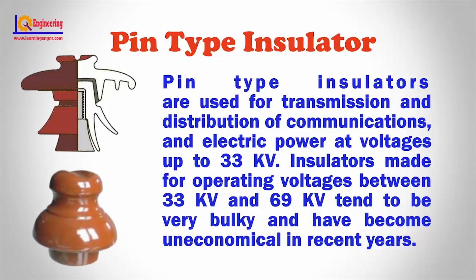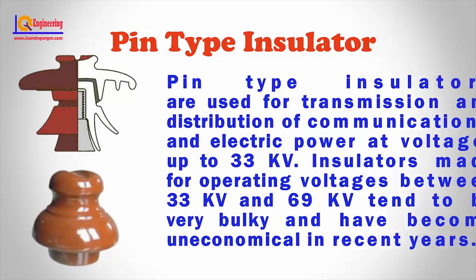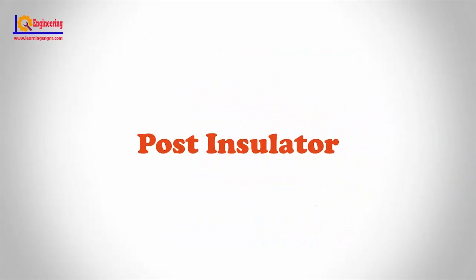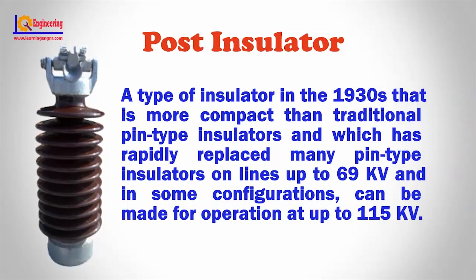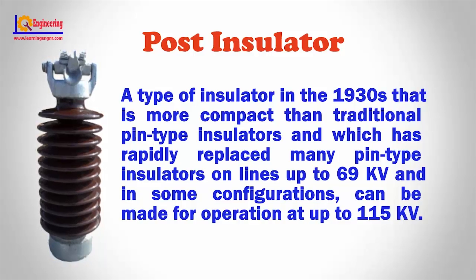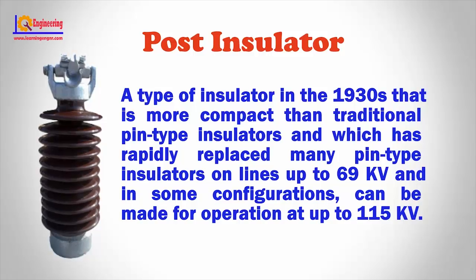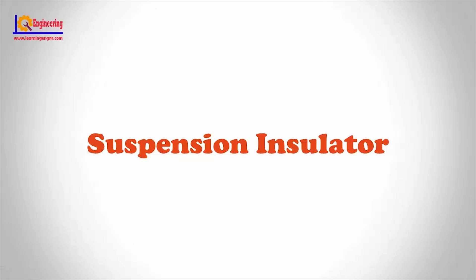Insulators made for operating voltages between 33 kV and 69 kV tend to be very bulky and have become uneconomical in recent years. Post insulator: A type of insulator developed in the 1930s that is more compact than traditional pin type insulators, which has rapidly replaced many pin type insulators on lines up to 69 kV and in some configurations can be made for operation at up to 115 kV.